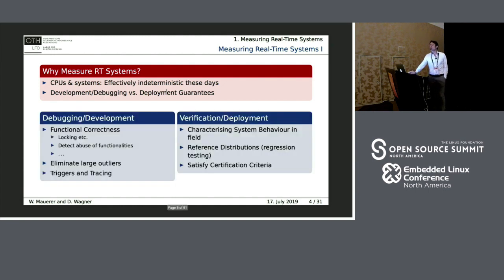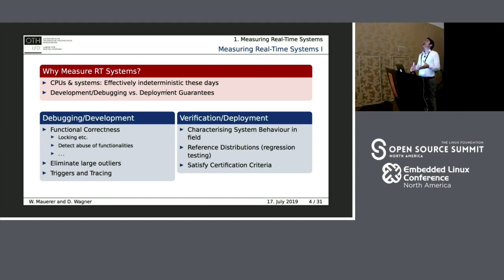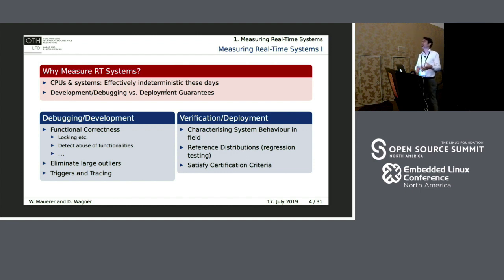We need to distinguish two different modes of analyzing real-time systems by measurement. One is debugging and development. When you build new systems, integrate devices, deploy new device drivers, a lot of debugging is required before you can ship products — to eliminate the worst bugs like incorrect locking, excessive latencies from locking, and abuses of system functionality. For instance, engineers sometimes open TCP connections in real-time contexts with obvious results. These bugs can cause really heavy latencies — sometimes seconds or more.